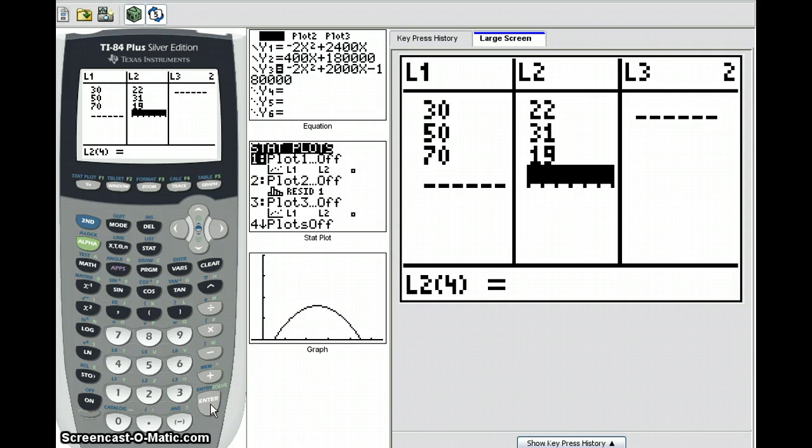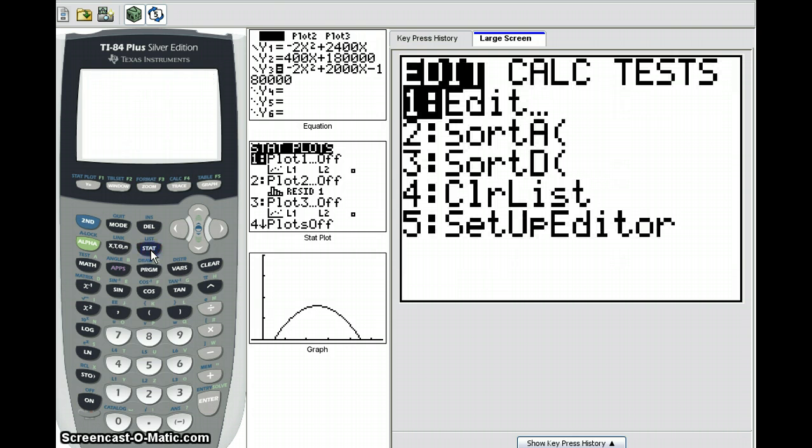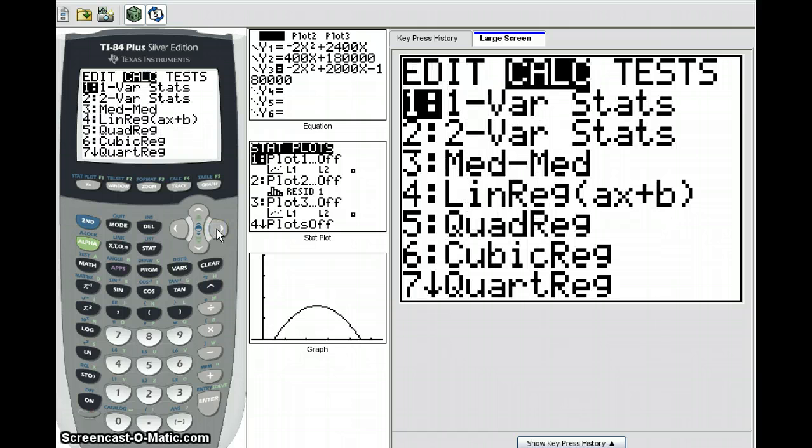Now we're going to fit a quadratic curve to this. To do this, press the Start key and scroll across to Calc. We're going to choose quadratic regression, in other words, number 5, which is quadreg.